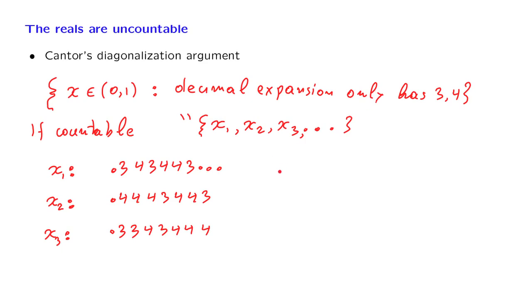Let's construct a new number in the following fashion. The new number looks at this digit and does something different. Looks at this digit, the second digit of the second number, and does something different. Looks at the third digit of the third number and does something different. And we continue this way.